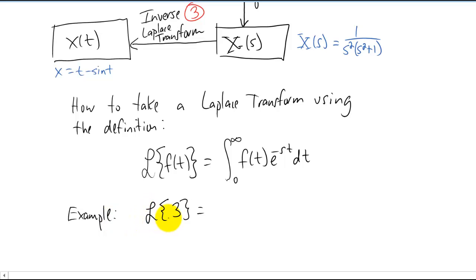So as an example, if you want to find the Laplace transform of the function three, you put three into this integral and you integrate. Now this s here, that is just a parameter. That is not a function of t or anything like that. So we can treat it as if it's a constant in this integral with respect to t.